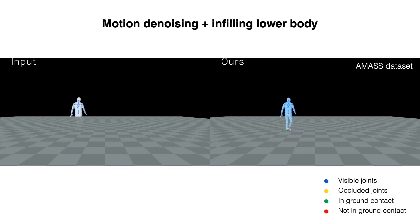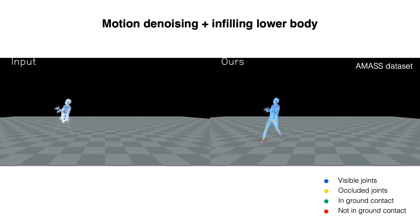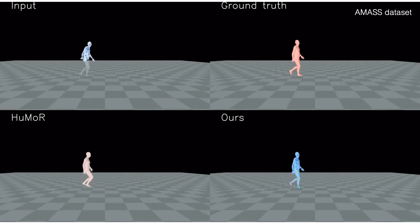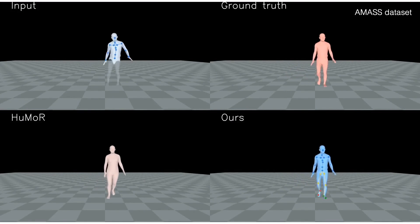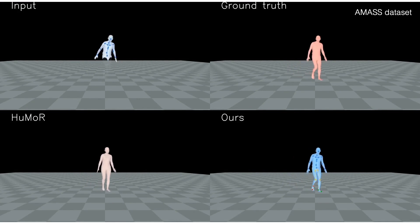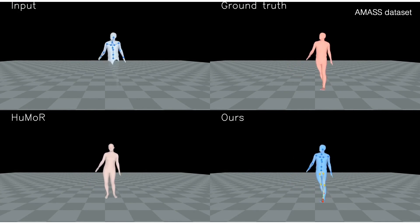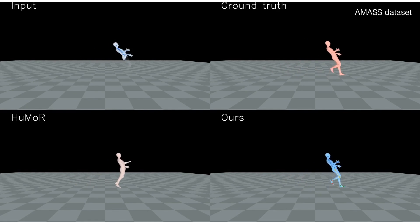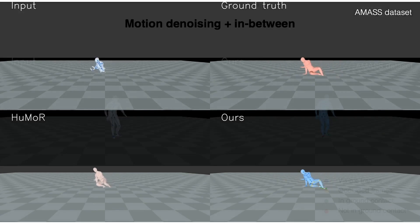Here, we present the results on the AMASS dataset for motion denoising and infilling. Synthetic Gaussian noise is added to the input body, with the lower body masked out for all frames. Compared with the baseline, which exhibits severe foot skating and implausible motions, our method produces more natural motions, with better reconstruction accuracy, more plausible dynamics for occluded body parts, and accurate foot-ground contact predictions.